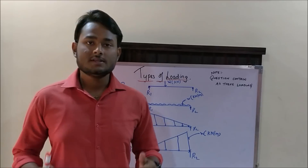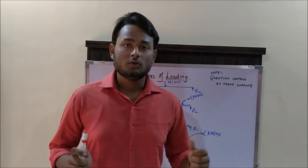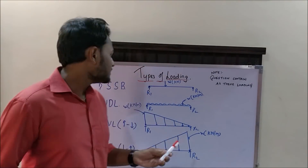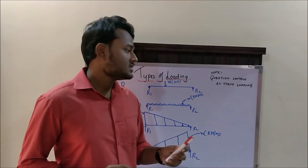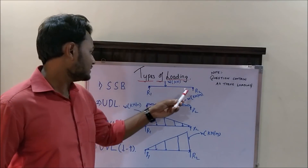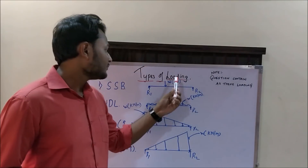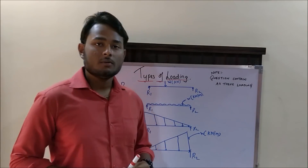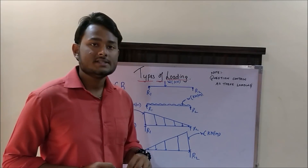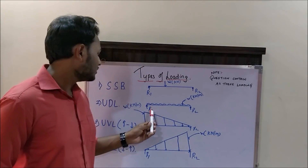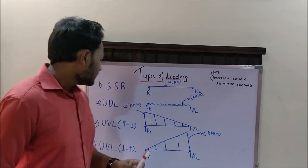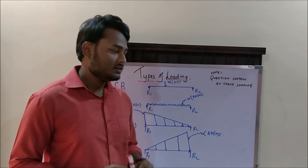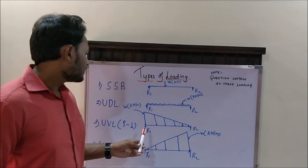Now, let us brush up with the basics of types of loading. There are four types. The first one is a simply supported beam in which two reactions act at both ends and one load acts at the center or anywhere in the span. The second one is the uniformly distributed load in which the load intensity remains constant throughout the beam.